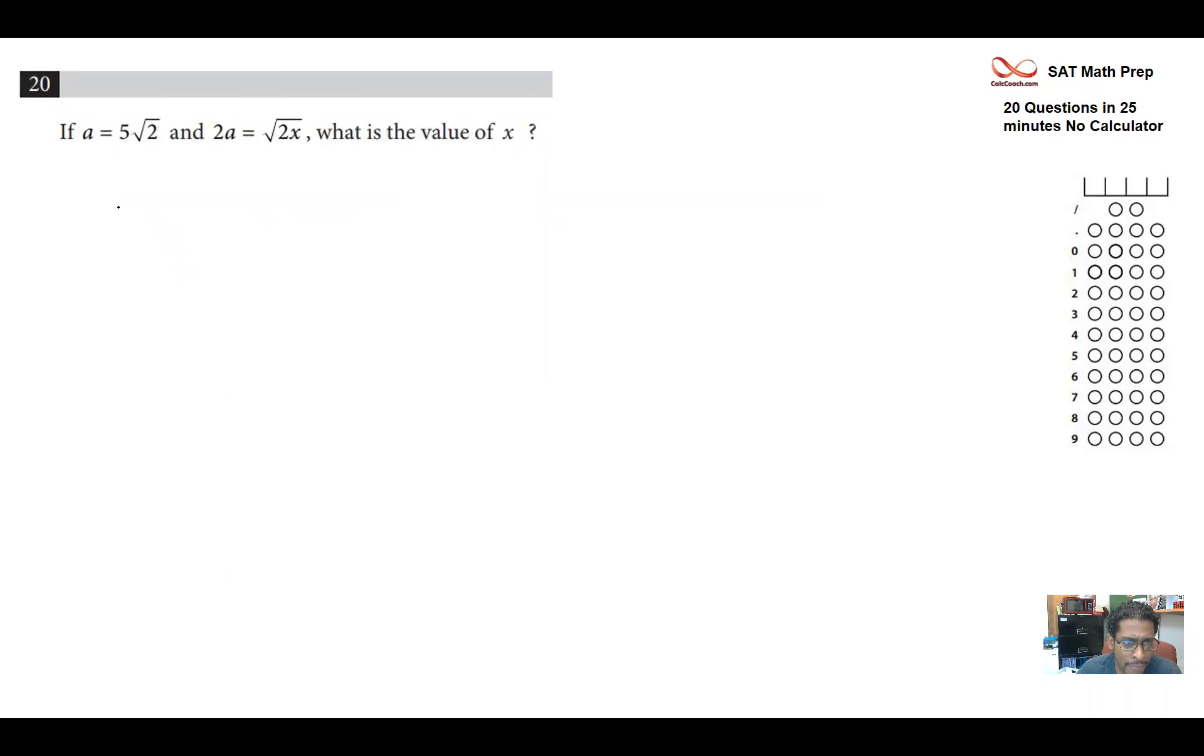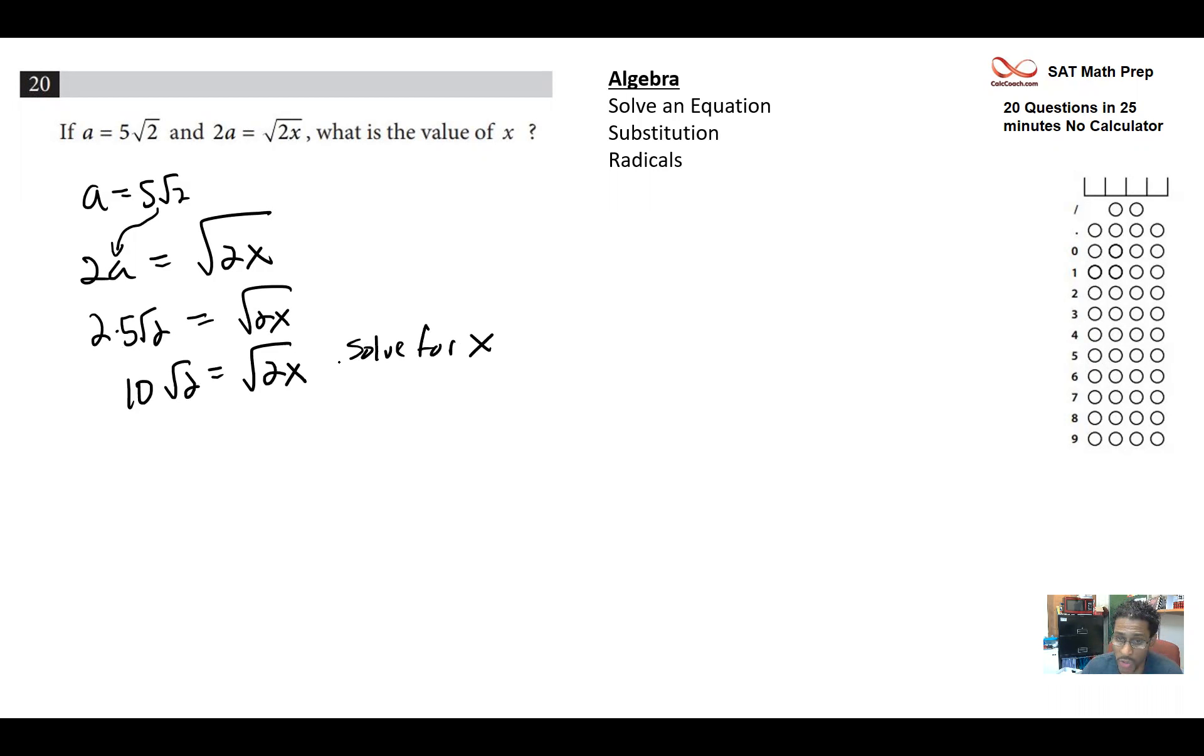And the last question. We have the fact that a is equal to 5 root 2. And we have this equation about 2a being equal to radical 2x. So we're solving the equation. It's radicals involved, but that's fine. So we have a substitution. 2 times 5 rad 2 is rad 2x. That's 10 rad 2 is rad 2x. Your job is to solve for x. Well, my recommendation is to undo what's being done to it. And you're going to undo that by squaring. So we square both sides. So we have 100 times 2 is equal to 2 times x. That means x must be 100.